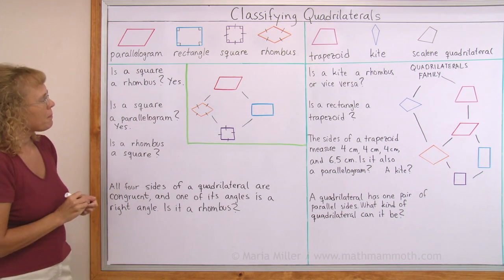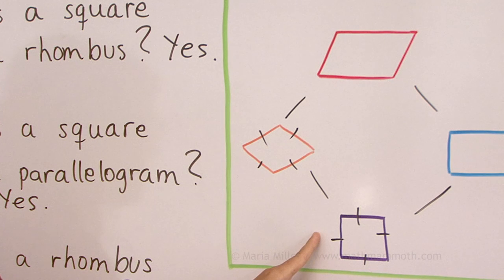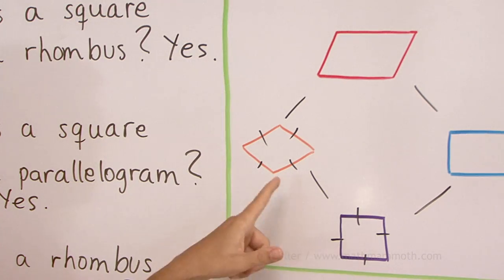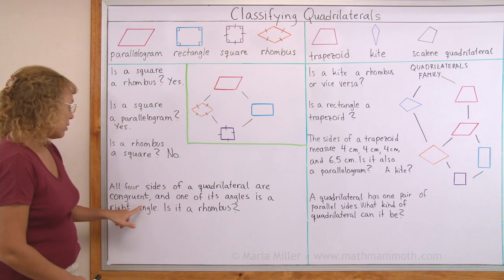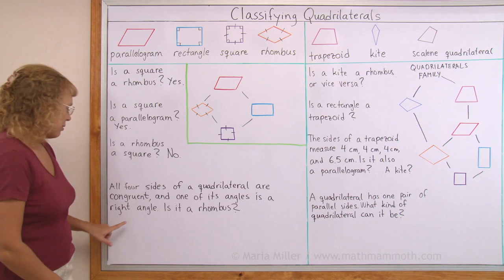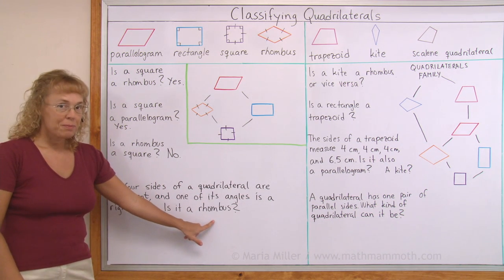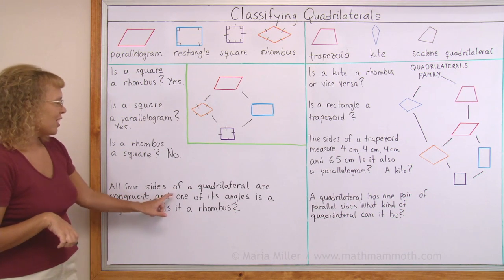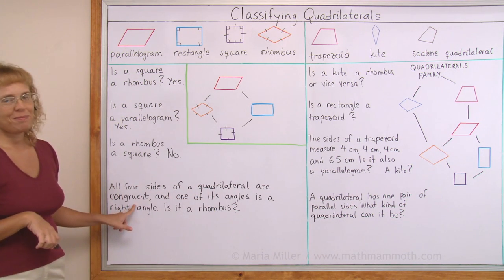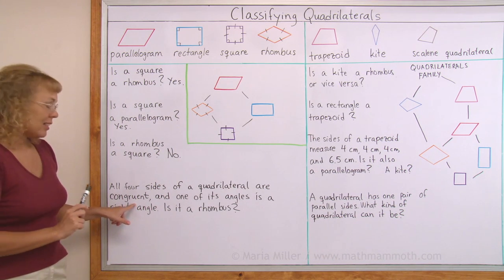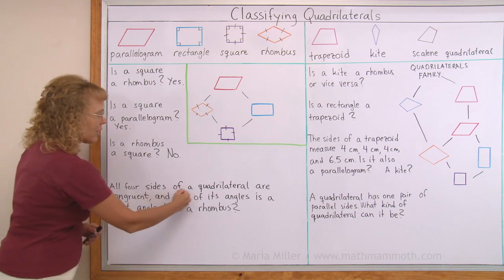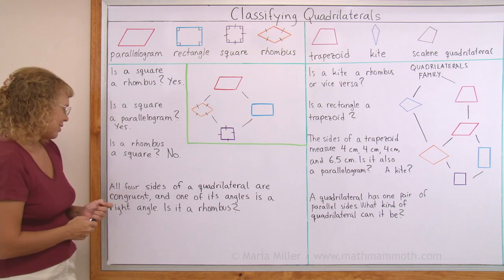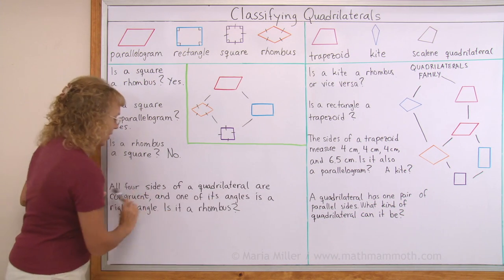Is a rhombus a square? The answer is no. In a square you need to have four right angles, and a rhombus wouldn't necessarily have that. Now: all four sides of a quadrilateral are congruent, and one of its angles is a right angle — is it a rhombus? If you think back, isn't this exactly the definition of a rhombus? All four sides are congruent. So we don't actually need the piece of information about the right angle. Just based on that, it is a rhombus. Yes.